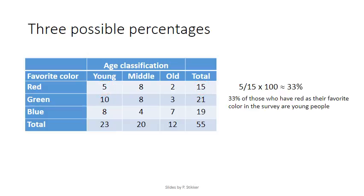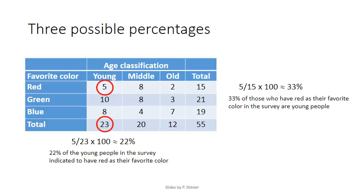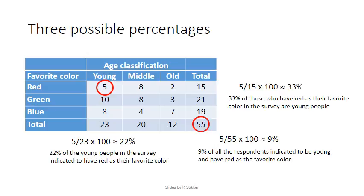We could also use the column total in our calculation. Using the column total of 23, the five people at young and red gives us 5 over 23 times 100, which is 22 percent — meaning 22 percent of the young people in the survey indicated red as their favorite color. The last option is to use the grand total of 55. Using young and red again, we get 5 over 55 times 100, which equals 9 percent — meaning 9 percent of all respondents indicated being young and having red as their favorite color.